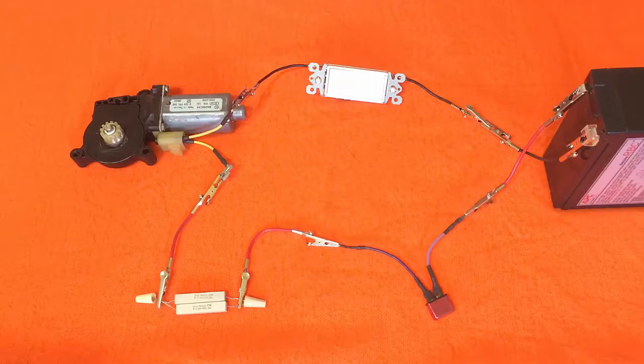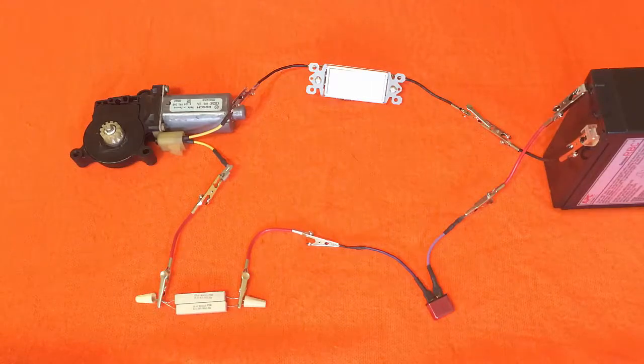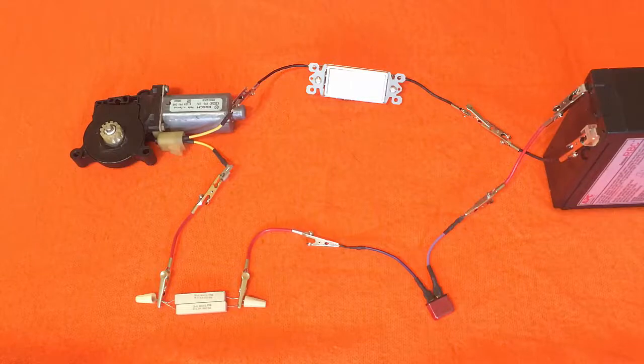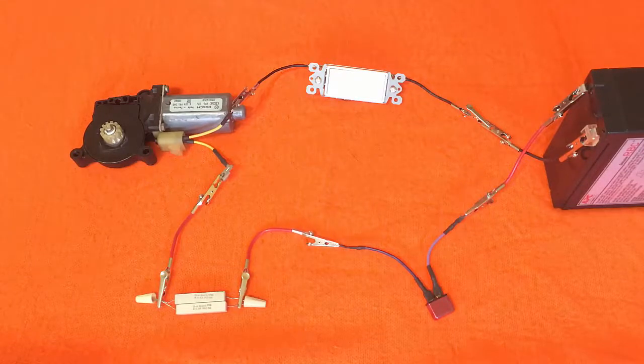We're going to start with some older cars because the older cars have the window motor system in its simpler form. You have to understand the fundamentals of how that works before you can even consider a newer vehicle that has computers and modules controlling everything.